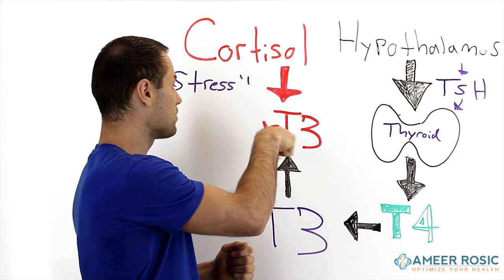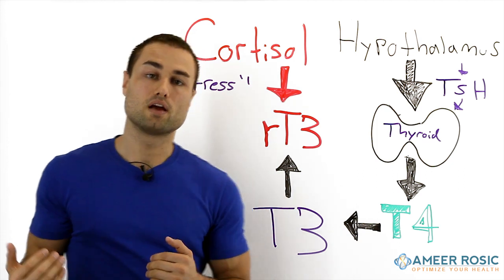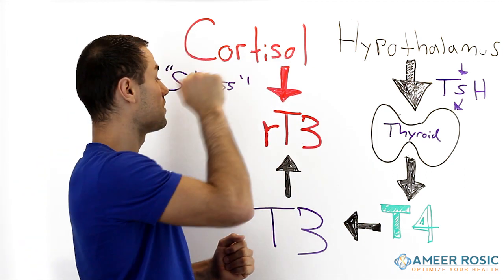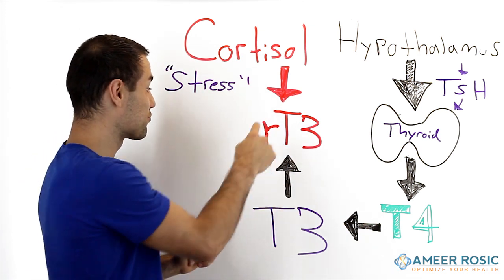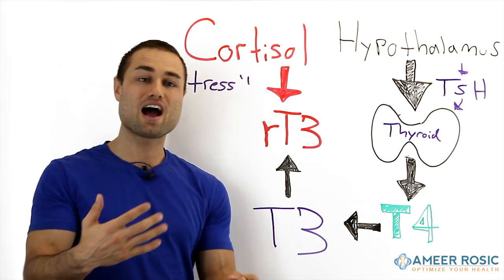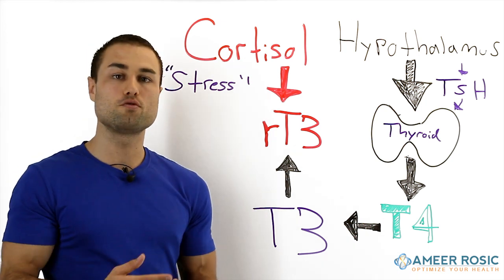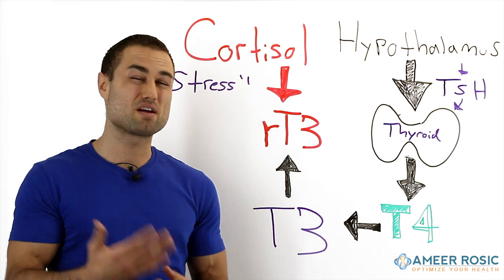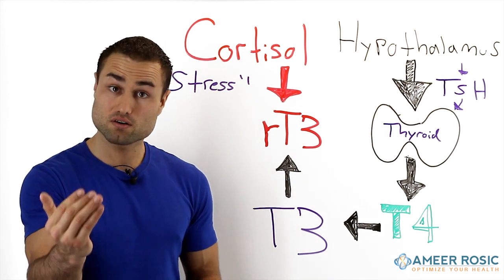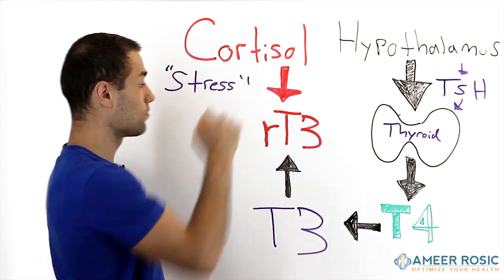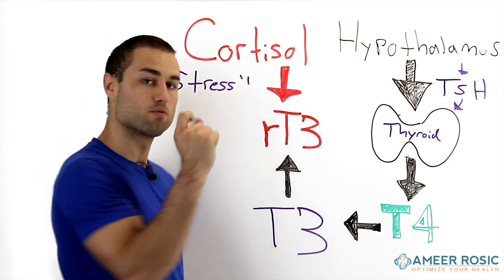When you have reverse T3, your body does not compute your metabolism properly. What causes RT3 is really cortisol. Cortisol will actually take T3 and transform it into reverse T3. So when you have high stress situations, a pathogenic infection, foods that are bad for your body, heavy metal toxicity, or anything putting a burden on your adrenal glands, your adrenal glands stimulate cortisol — your stress hormone — and cortisol converts T3 into RT3.